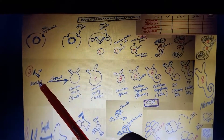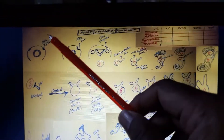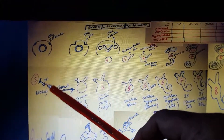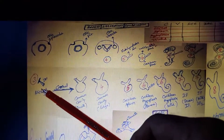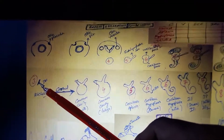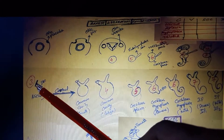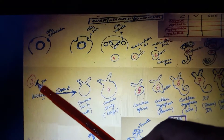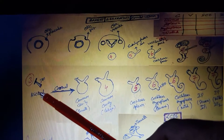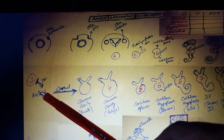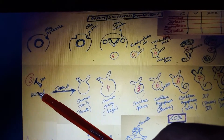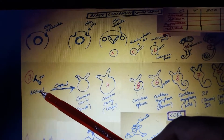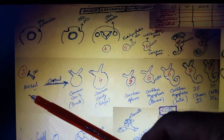If the arrest happens at the otic placode, that becomes Michel's abnormality, where you will see the internal auditory canal but the whole inner ear is not there — just a simple small mass. In this situation, there is no option of cochlear implant; you have to directly do the auditory brainstem implant, ABI.